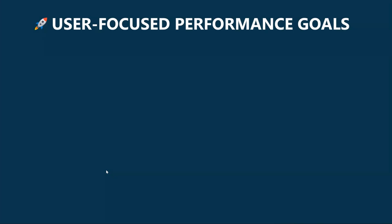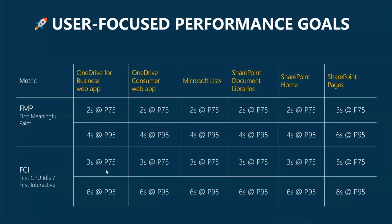Let's look at the performance goals we have for our web applications. In a nutshell, we're targeting painting relevant content on the screen across our web apps in two seconds or less at the 75th percentile, and four seconds or less at the 95th percentile. The only exception is SharePoint pages, where goals are a bit more conservative because content is so dynamic and largely influenced by whatever web parts you put on the page. For interactivity, we're shooting for three seconds at P75 and six seconds at P95. These are our current internal goals, and we're in constant pursuit of making our web apps faster.